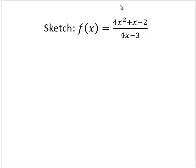We're asked to sketch f of x equals 4x squared plus x minus 2 over 4x minus 3. First, let's see if this is in the lowest terms.